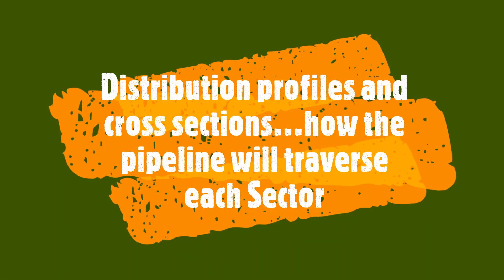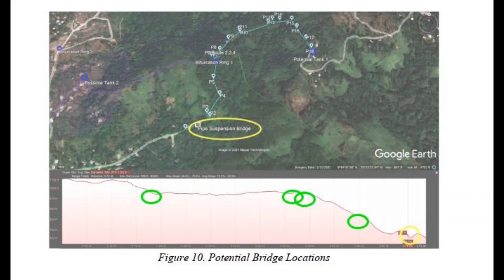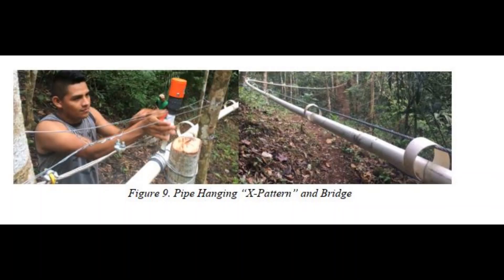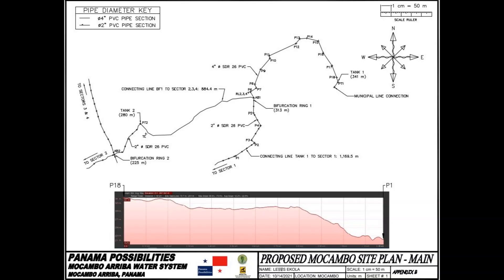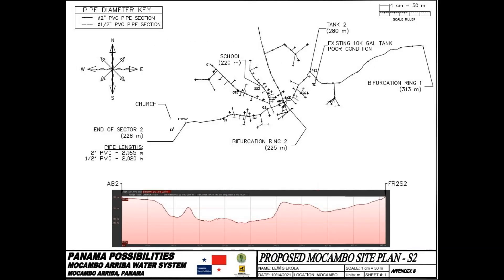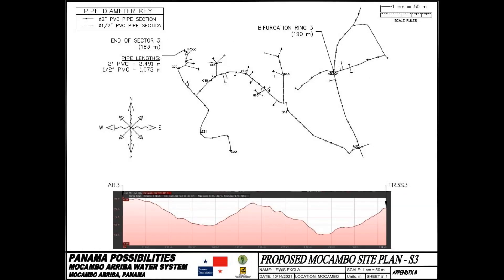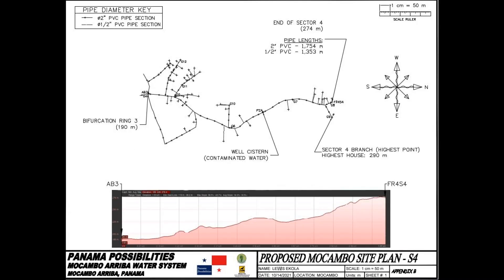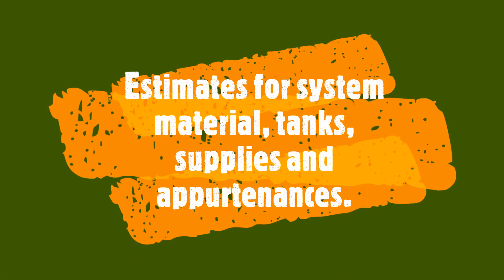Distribution profiles and cross sections are next. How the pipeline will traverse each sector has to be shown. Pipe bridges will be used in low spots so as not to lose head and pressure. Each profile shows how the pipe will lay on the ground for the topography in each sector. Although not to scale, it does show the variation in ground level that we have to manage.